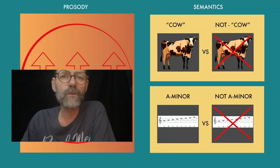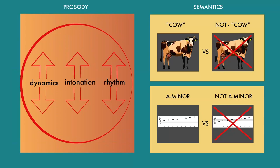Prosody refers to the rhythm, intonation and expressive aspects of speech. It has to do with variations in pitch, tempo, stress and timing. What it does is add a layer of nuance and emotion to the semantics — that is, the content of what is said. At times, or perhaps consistently, there is a discrepancy between these two layers, making it challenging for a listener to discern whether the emphasis is on the literal meaning of the words or the emotional tone conveyed through the way they are spoken.